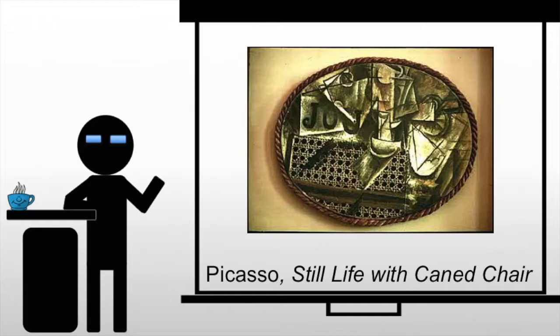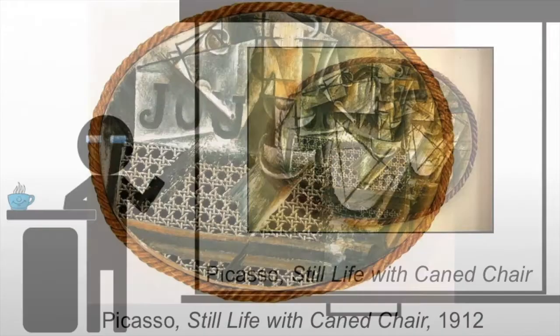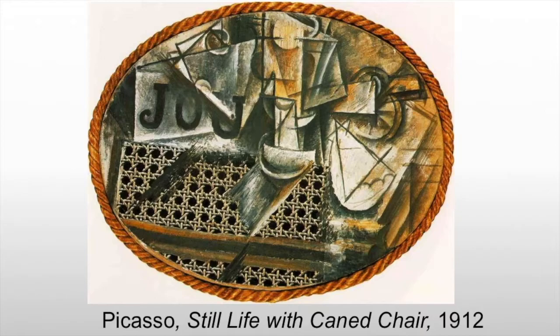Picasso's still life with cane chair is a great example of synthetic cubism. The cane chair is a photographic representation mounted to the canvas, in contrast to the painted areas which do not refer to tangible objects, yet their lack of imitation of real objects makes them feel more real.